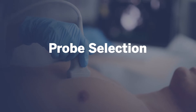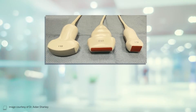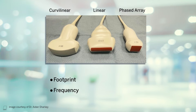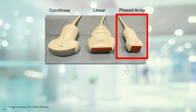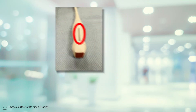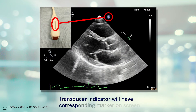We will now move on to probe selection for point-of-care ultrasound. In general, probes used for point-of-care ultrasound are classified as either curvilinear, linear, or phased array probes. The footprint of the probe and the frequency of ultrasound waves emitted are the major differing factors between probes. For cardiac ultrasound, we generally choose the phased array probe. This probe is chosen for its small footprint, along with its low frequency, thus giving good tissue penetration. For all ultrasound probes, it is important to make note of the transducer indicator on the ultrasound device and which side of the image this corresponds to on the screen. This becomes very important for correct anatomical display on our echo views.